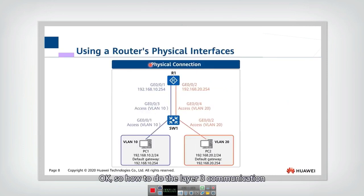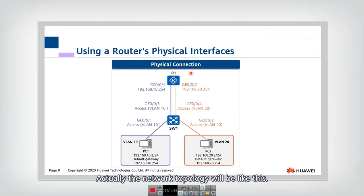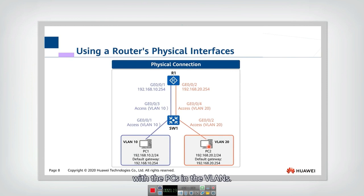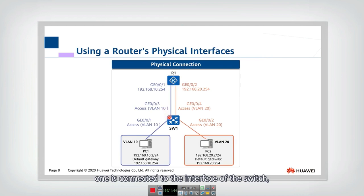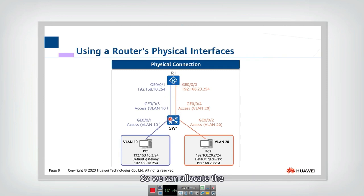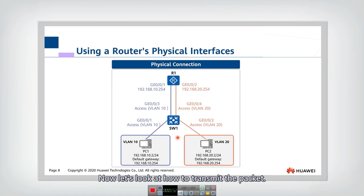How do we do layer 3 communication using a router's physical interface? The network topology will be like this: we have two different VLANs connected through a switch. All packets should go up to the layer 3 device — a router. In this router, we have two different physical interfaces. One is connected to one interface of the switch, and another is connected to another interface of the switch. We can allocate each interface to a different VLAN. Now let's look at how to transmit the packet.